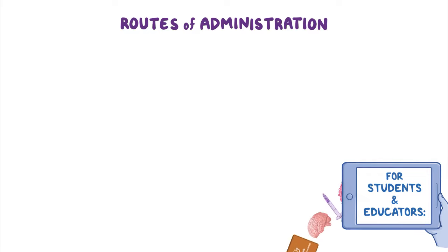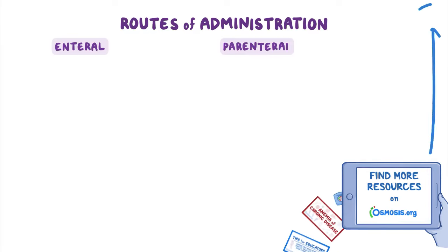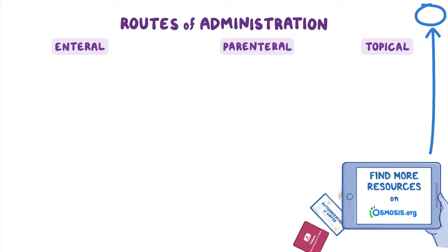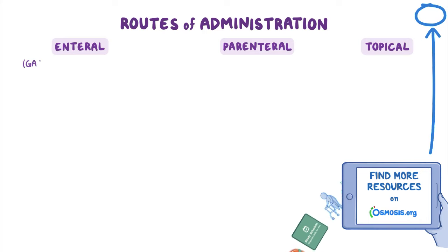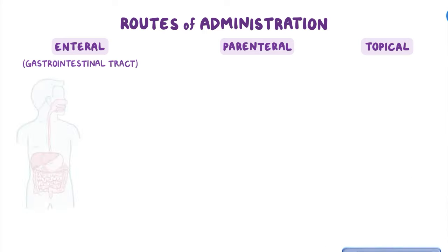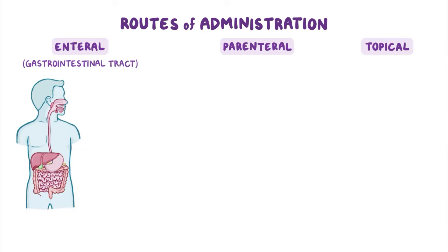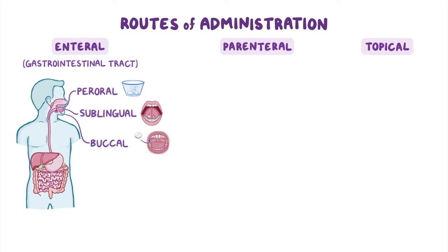Routes of administration are broken down into three main categories: enteral, parenteral, and topical. In enteral administration, which is the most common form, the medication is administered through the gastrointestinal tract. This could mean it's swallowed by the mouth, also known as paroral administration; placed under the tongue, also known as sublingual administration; between the gums and the inner lining of the cheek, also known as buccal administration; or into the rectum, also known as rectal administration.